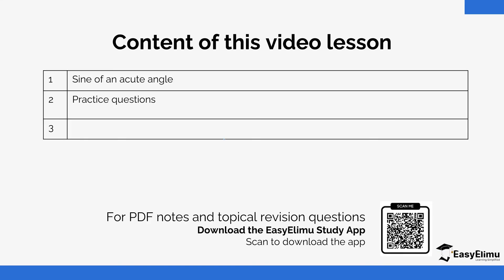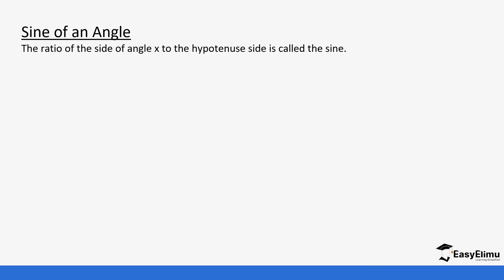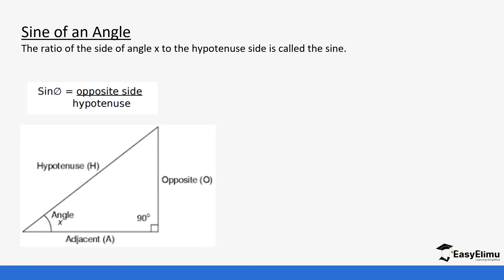We previously looked at the tangent of an acute angle. Today we are going to derive the formula to calculate the sine of an acute angle. Just like with the tangent, we are still going to use a right-angled triangle. To get the sine of an acute angle, we use the opposite side over the hypotenuse.